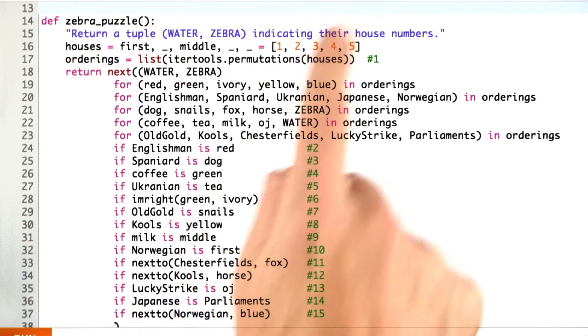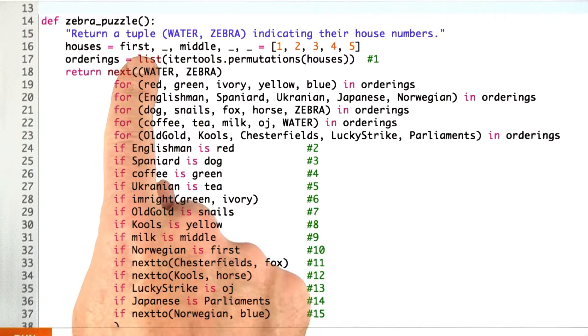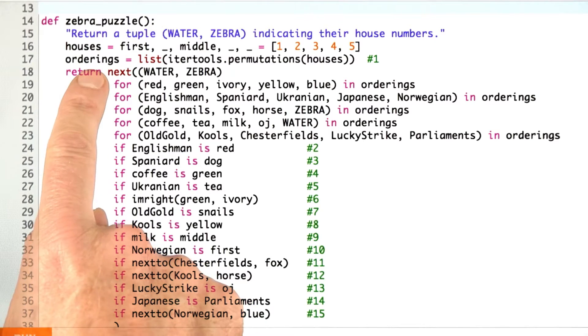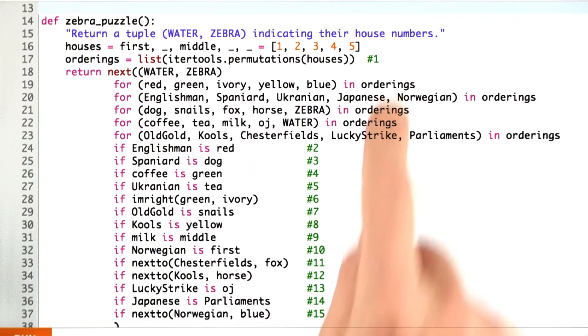I've repeated houses equals 1, 2, 3, 4, 5, and I've also defined first and middle. I've repeated the work of figuring out all the orderings. That's constraint number 1.